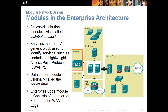We have the access distribution model — that's going to be the distribution block with typical in-type devices. We're going to have a service module, which is a generic block used to identify services of any type. We're going to have a data center, which could also be a server farm. We're going to have an enterprise edge module, which could also be a WAN edge module — that's going to be our DMZ, our security appliances, the edge before we go to the internet.